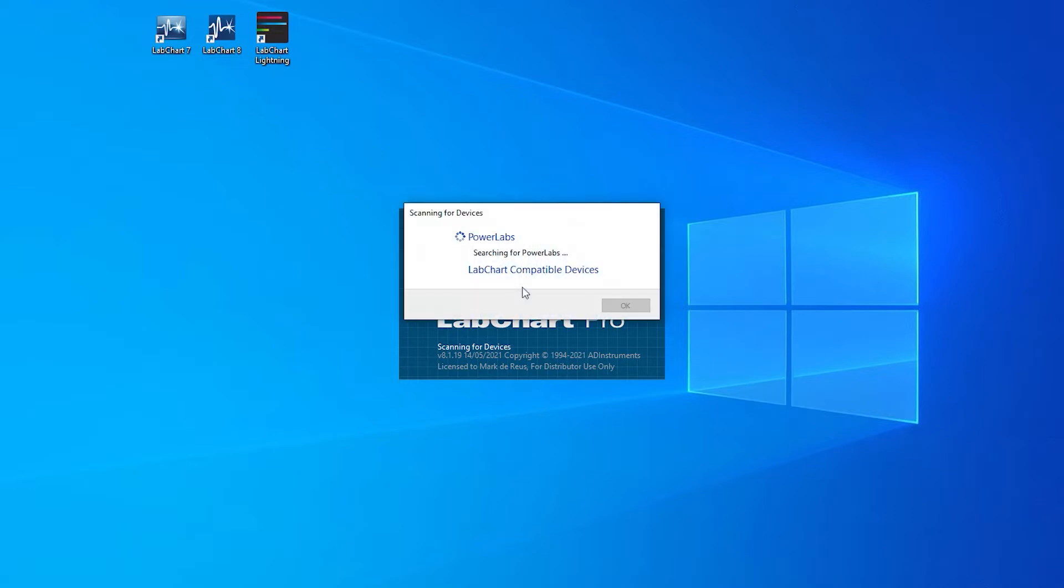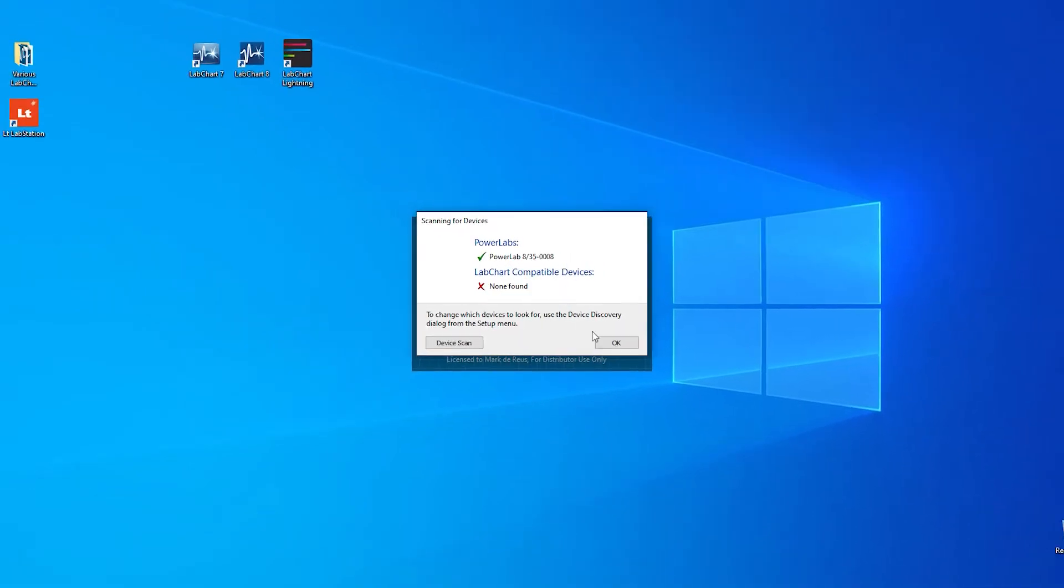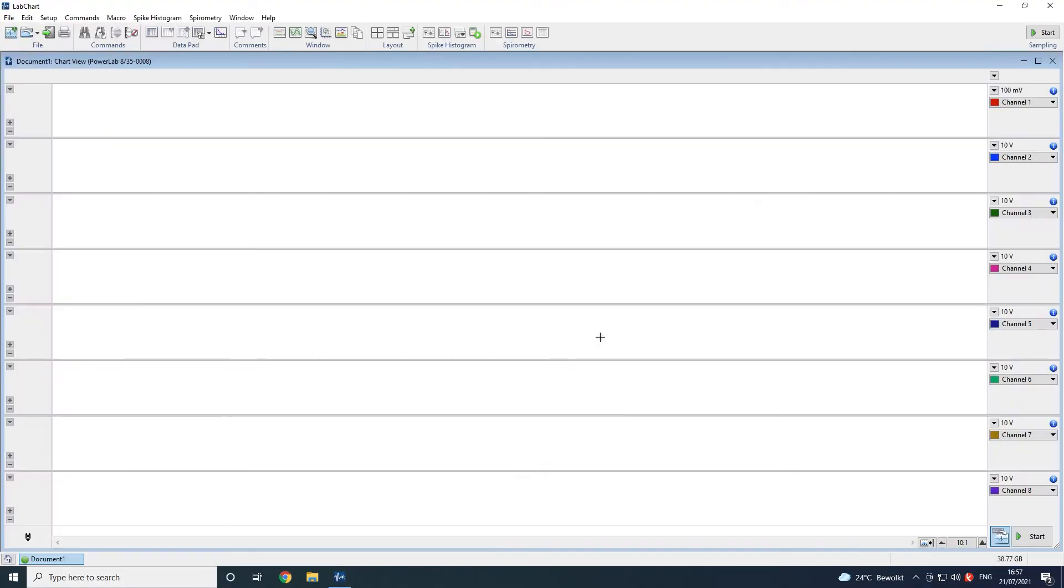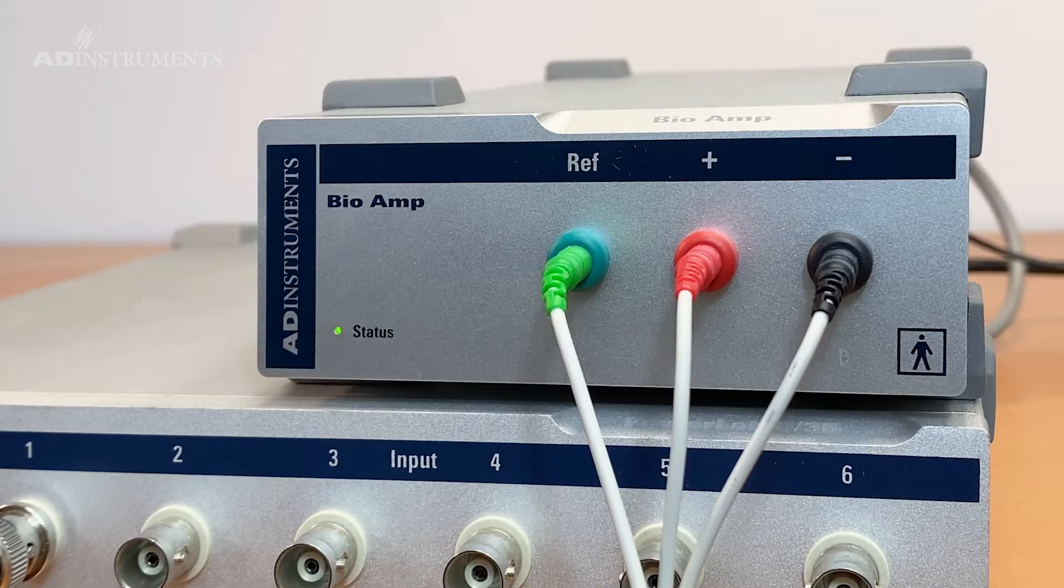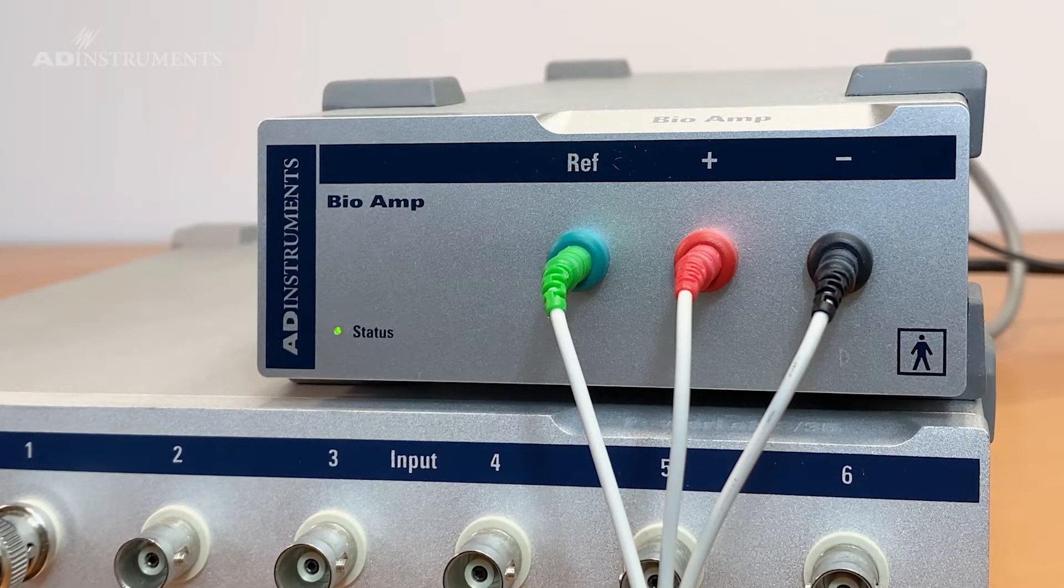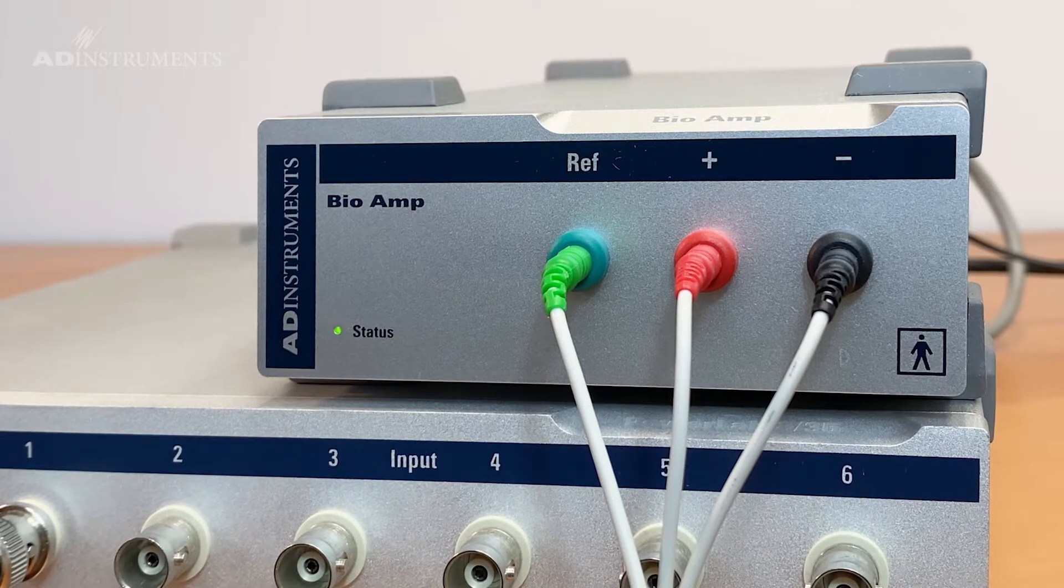Now start lab chart. When the bioamp is correctly detected by lab chart, the status light will turn a solid green.